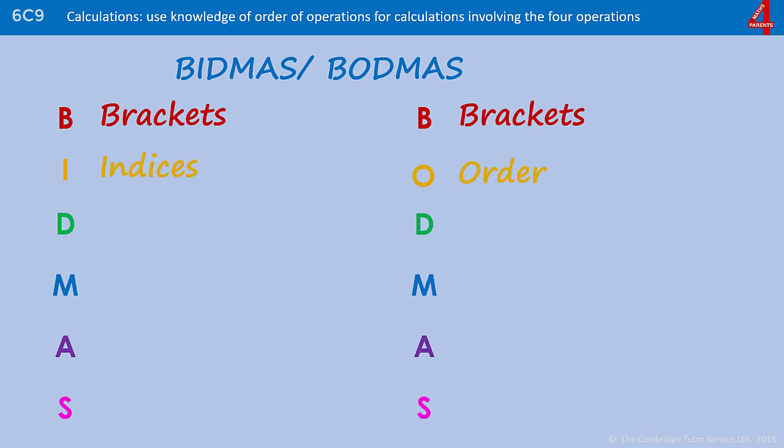Second, the only difference with the two acronyms but they mean exactly the same thing. In secondary we call them indices, in primary I've seen them called order or other, and that includes square numbers, cube numbers, and square and cubed roots. Some teachers don't teach this part of BIDMAS or BODMAS to year sixes, but I'm going to include some in here just so you can see what they are.